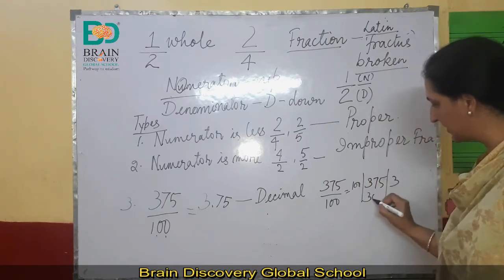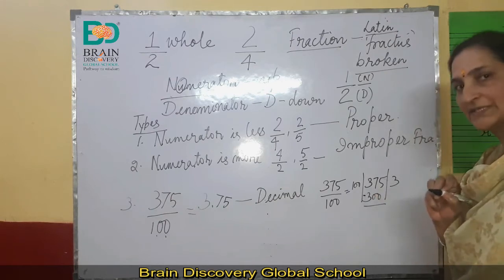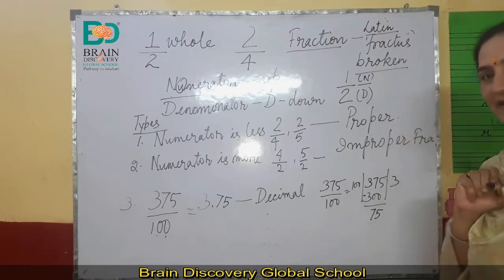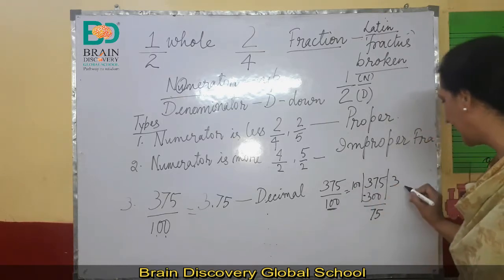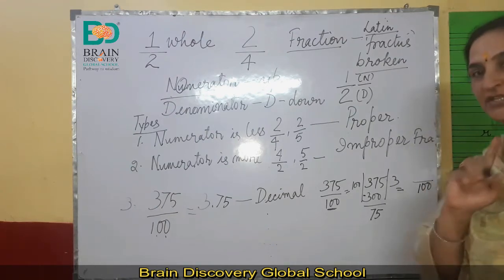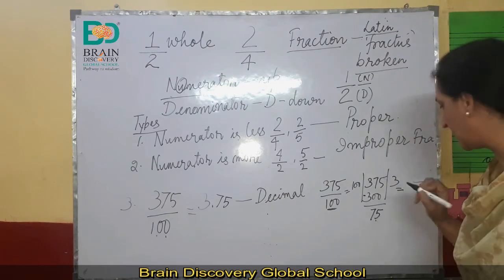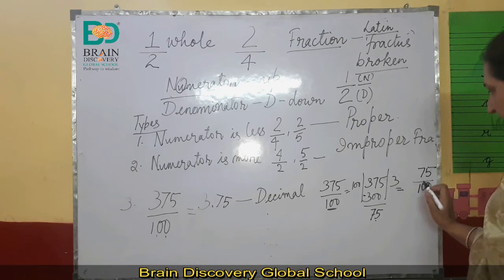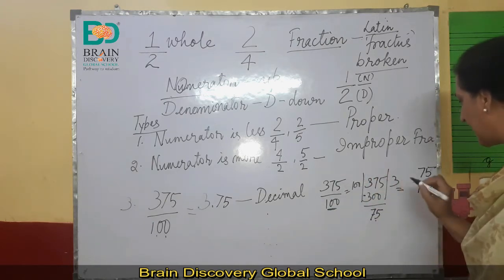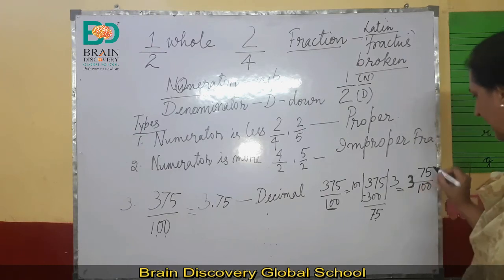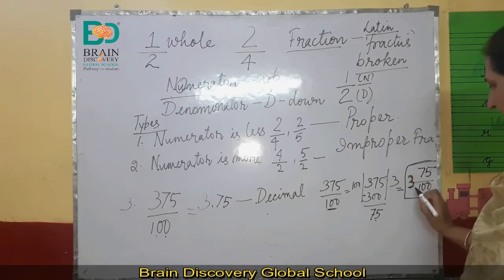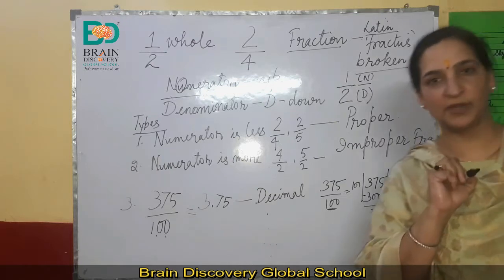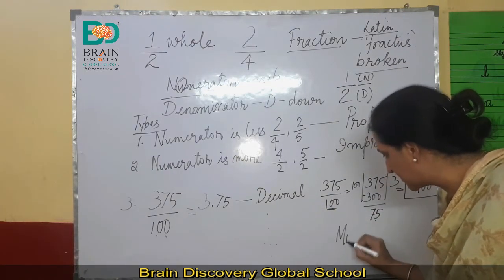There is another way of writing 3.75 divided by 100. When we divide, 3 goes as 300, and the remainder is 75. The denominator stays as 100, and the remainder 75 goes on top as the numerator. But the whole number 3 is written separately alongside. So you get a number like 3 and 75 over 100. Since this number has both a whole number and a fraction, we call this a mixed fraction.